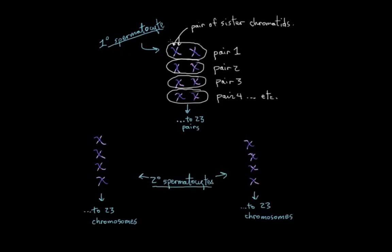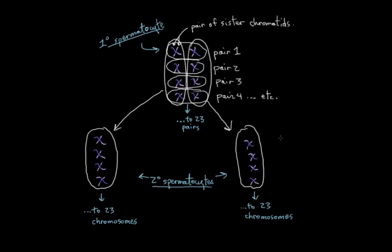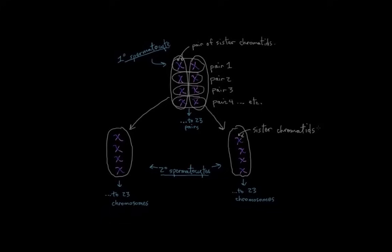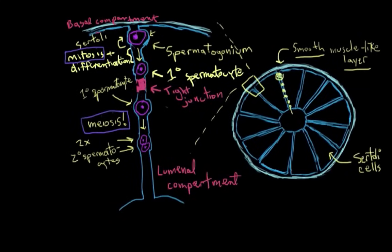When the primary spermatocytes differentiate into secondary spermatocytes, they give each of their daughter cells half of their chromosomes. So, now each secondary has 23 chromosomes, still with a sister chromatid each. So, now what happens? We have our secondary spermatocytes, each having 23 chromosomes in sister chromatid configuration, and now they need to differentiate.